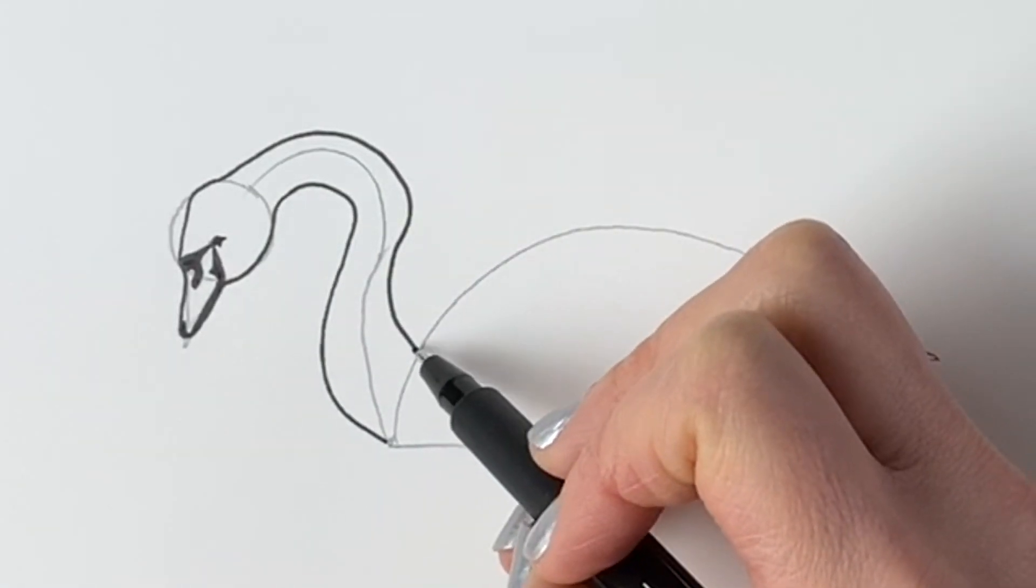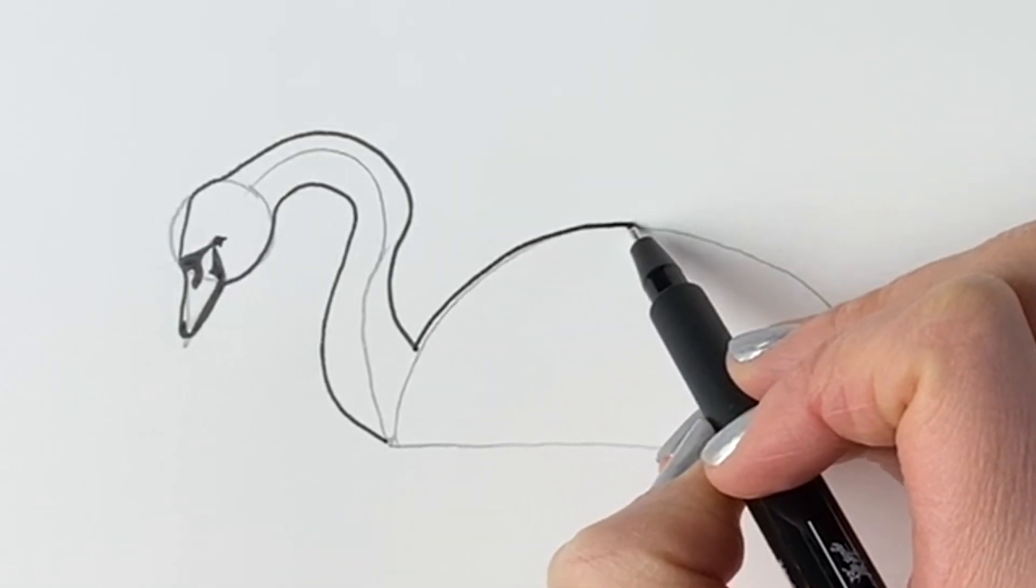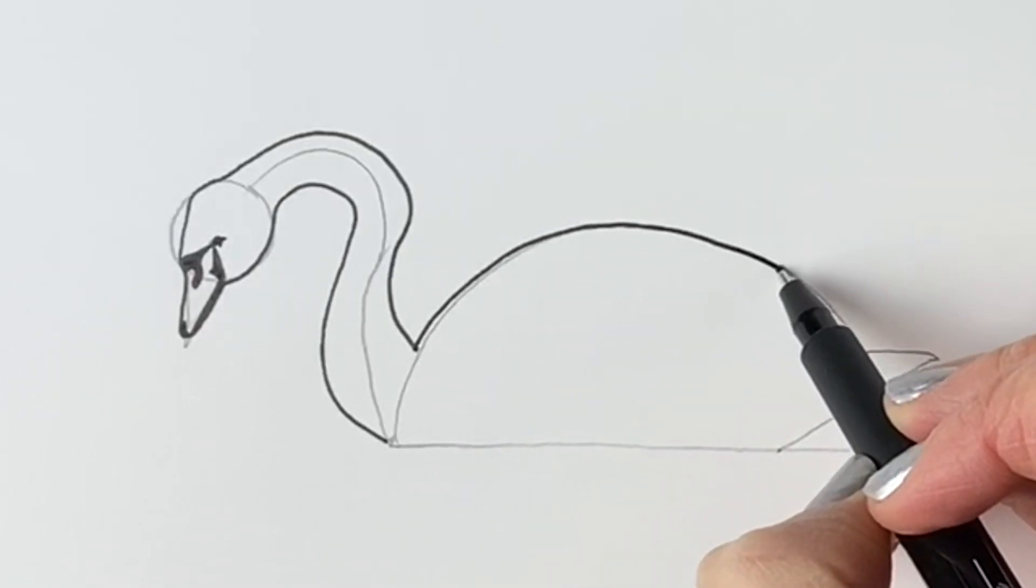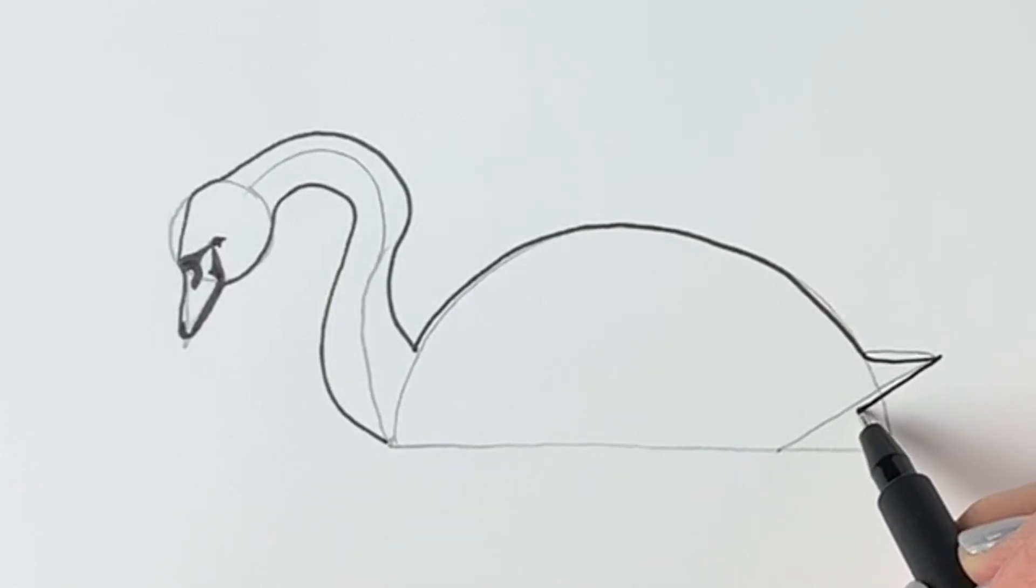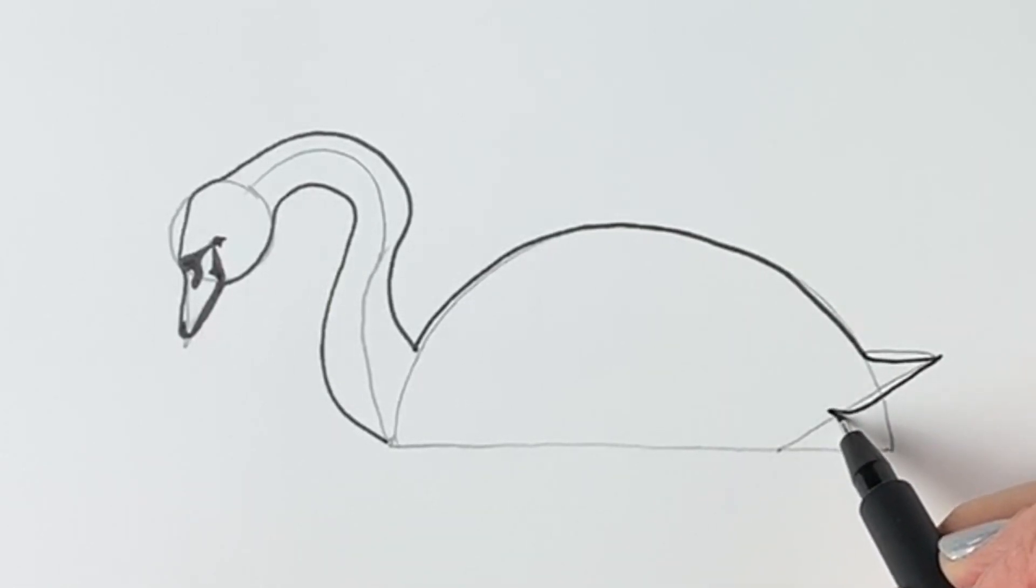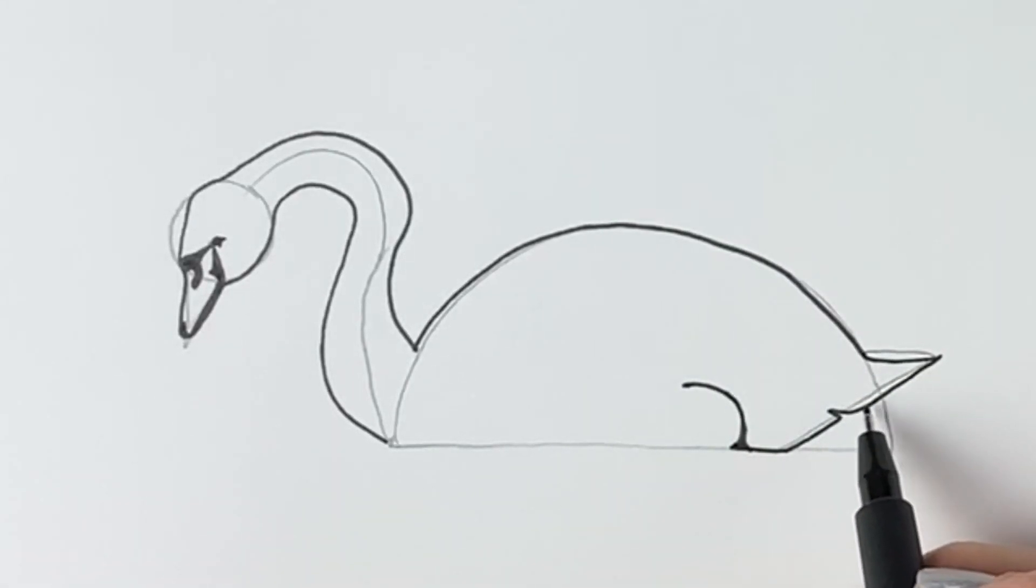Now we're going to be drawing the body, so this comes up and all the way around. We just follow our preparatory line until we get to there. Now we're going to do the tail, so this comes slightly more upwards, a little kink in it there until we reach the bottom and go along. Then just going to draw where the foot is tucked in, and a little bit of feather just down here. Now we're going to carry on this line.